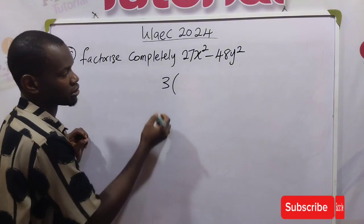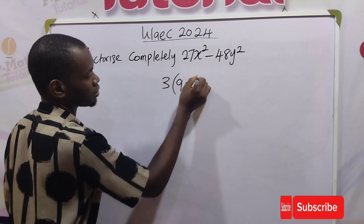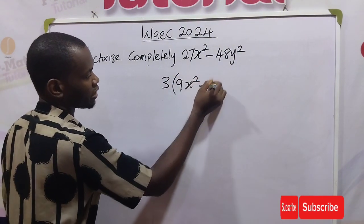Bring it outside, create a bracket. 3 divided into 27 is 9, then 3 divided into 48 we have 16.